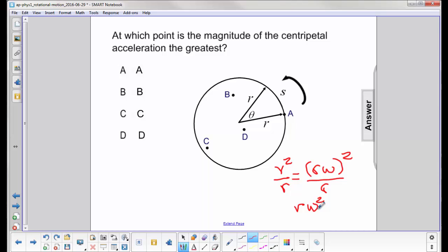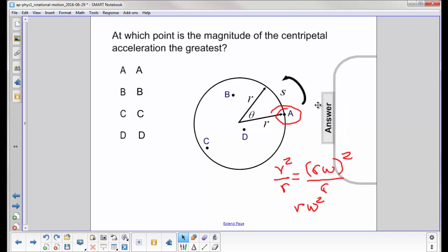In this case, omega is constant everywhere on the circle. That's the property of a rigid rotating body, but r changes. So the point that is furthest away from the axis of rotation, which is point a, will have the greatest centripetal acceleration.